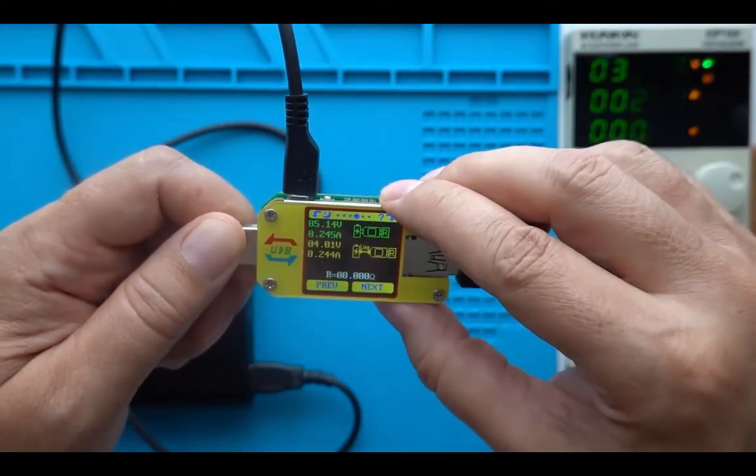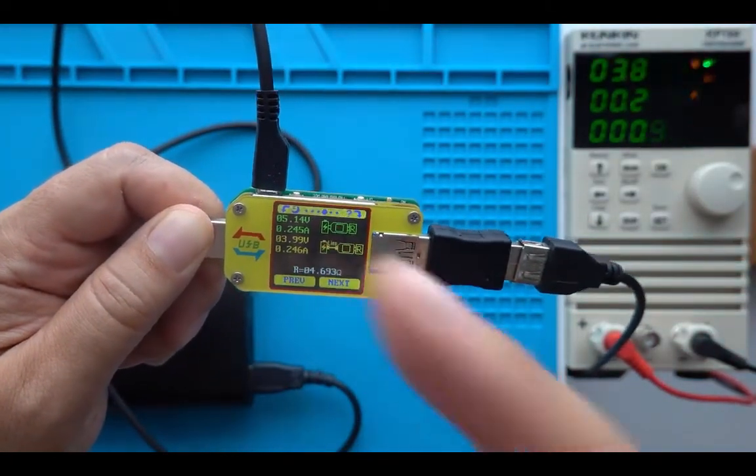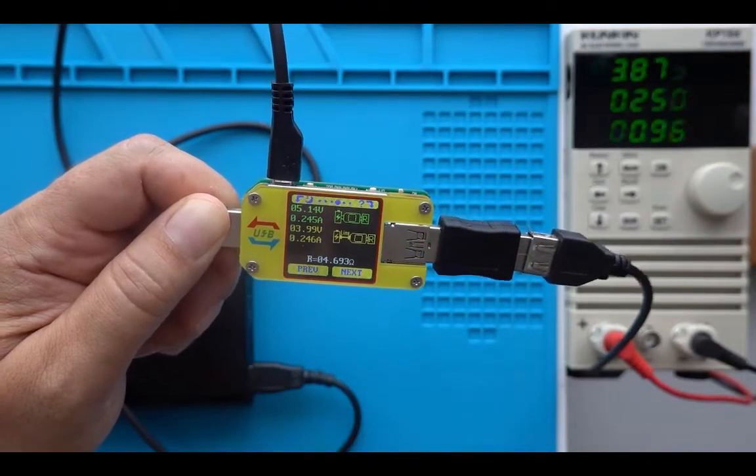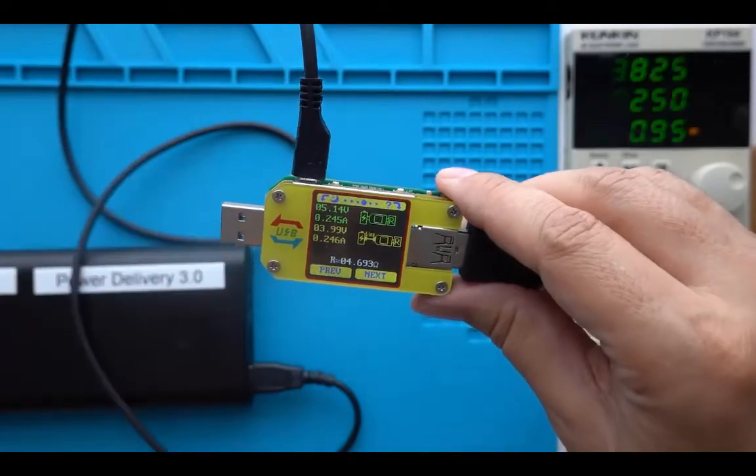So let's push the next button to have the calculation and then you can see here that this cable has a resistance of 4.693 ohms. So that's a lot for a USB cable like this.